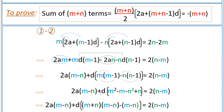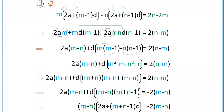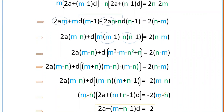Expanding further: 2a into m minus n plus d into m squared minus m minus n squared plus n, equal to 2 into n minus m. Now m squared minus n squared is in the form a squared minus b squared, which equals a plus b into a minus b. So m squared minus n squared equals m plus n into m minus n. Also, minus m plus n equals minus of m minus n when you factor out the minus sign.